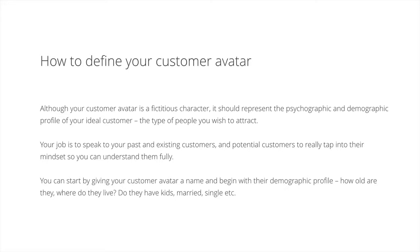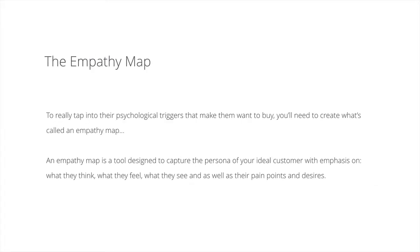You start by giving your customer avatar a name, then begin with their demographic profile first — how old they are, where they live, do they have kids, are they married or single. Then you move on to the psychographic data. To really get that good psychographic data, you need what's called an empathy map.